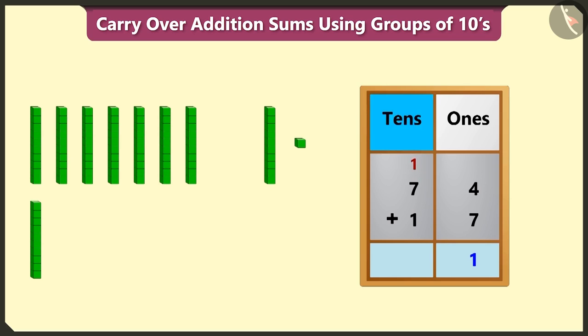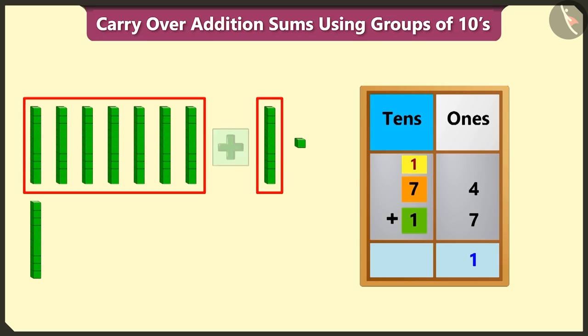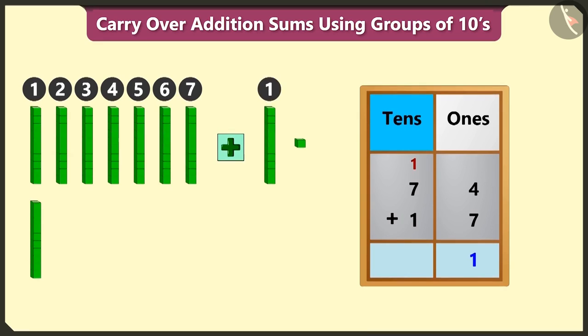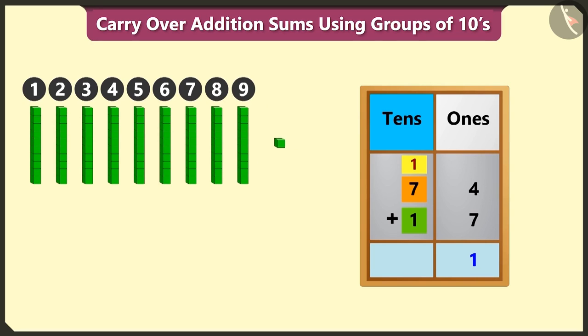Now we have to add the numbers in the tens box to the carry-over number. Adding seven to the carry-over number one will equal eight, and adding one to eight will equal nine. So we have to write nine in the tens box.